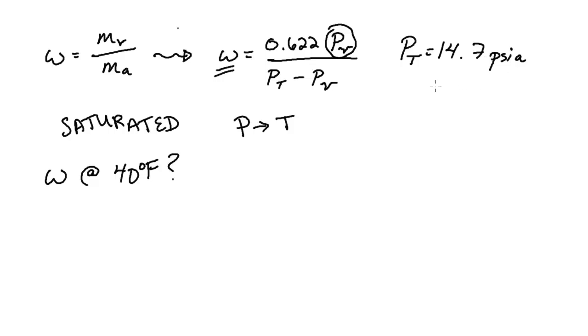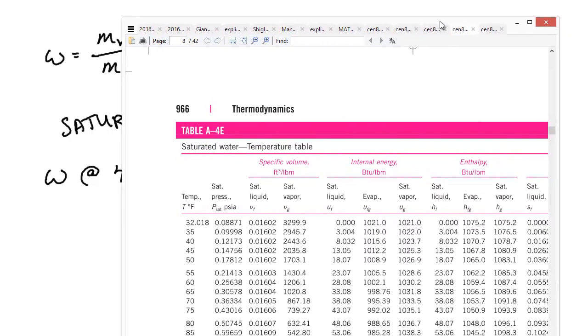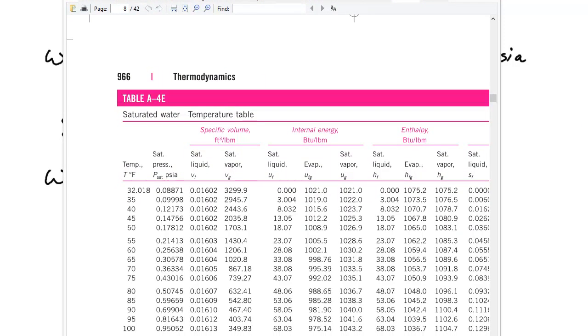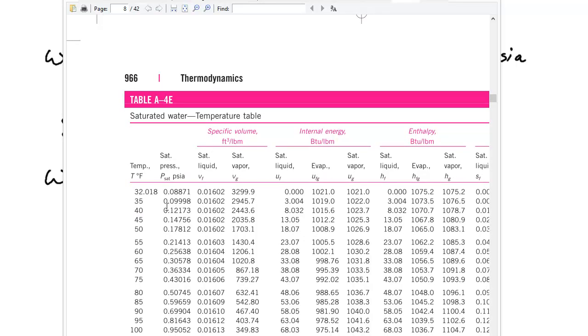So let me go ahead and let's bring over my saturated water tables from my thermodynamics textbook. And what you can see here is that at 40 degrees F, we have a saturation pressure in psia of 0.12.